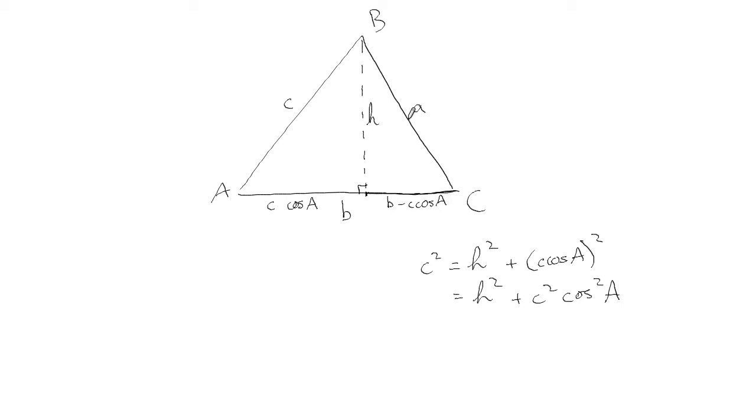So we could apply Pythagoras in this triangle as well. We get a squared equals h squared plus b minus c times cos A squared.